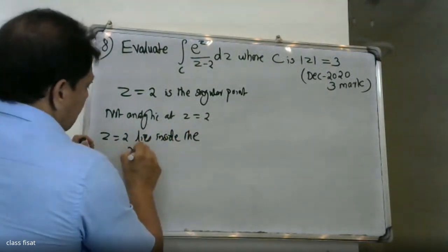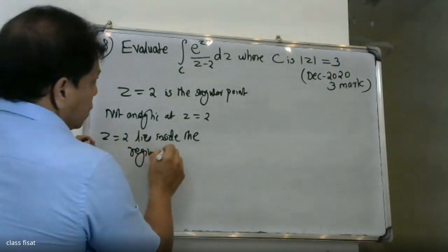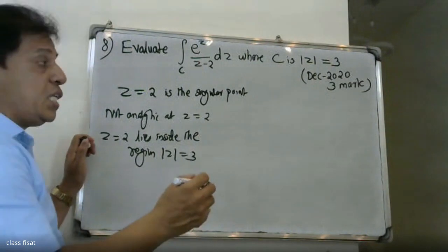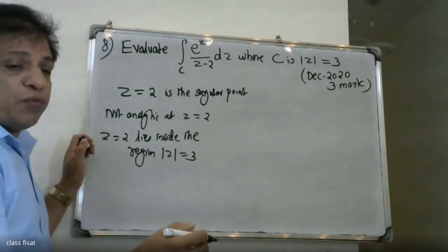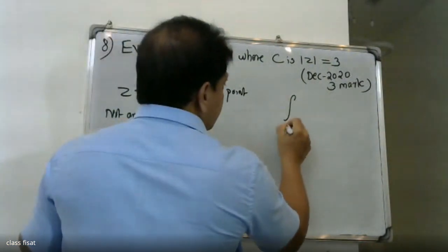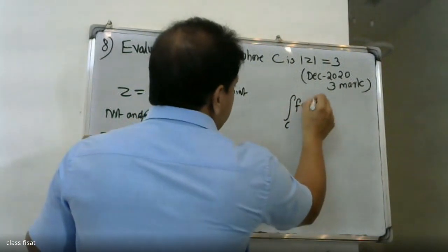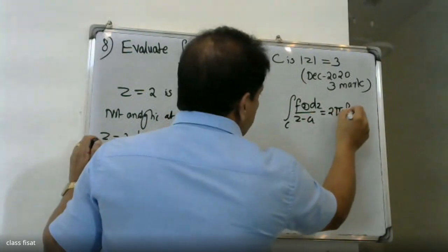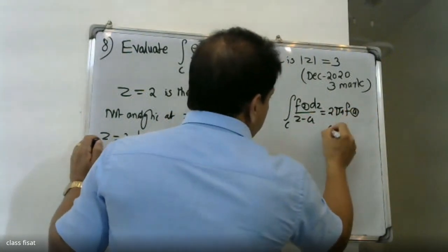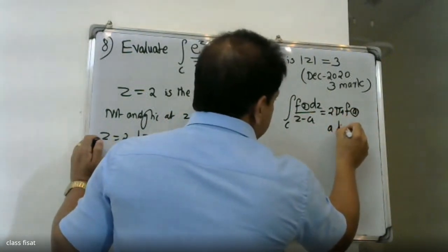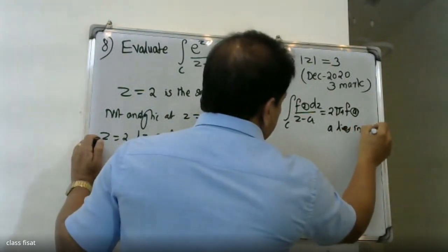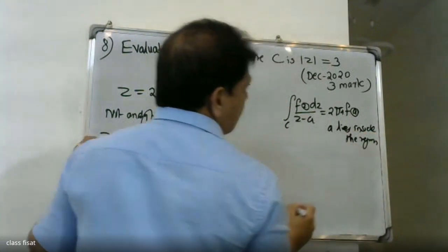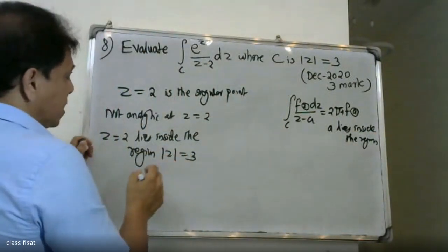Since the point A lies inside the region, we can apply Cauchy's integral formula. The integral of C, F of Z over Z minus A, is equal to 2 pi i into F of A. Here A lies inside the region.